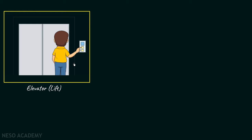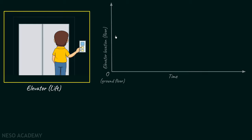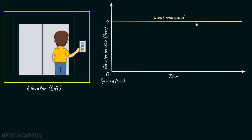We can represent this phenomenon with the help of a graph in which the y-axis represents the elevator location and the x-axis represents the time taken by the elevator to reach the fourth floor. The push of the fourth floor button is the input, represented as a step command, and in response to that, the movement of the elevator from the ground floor to the fourth floor is the elevator response.